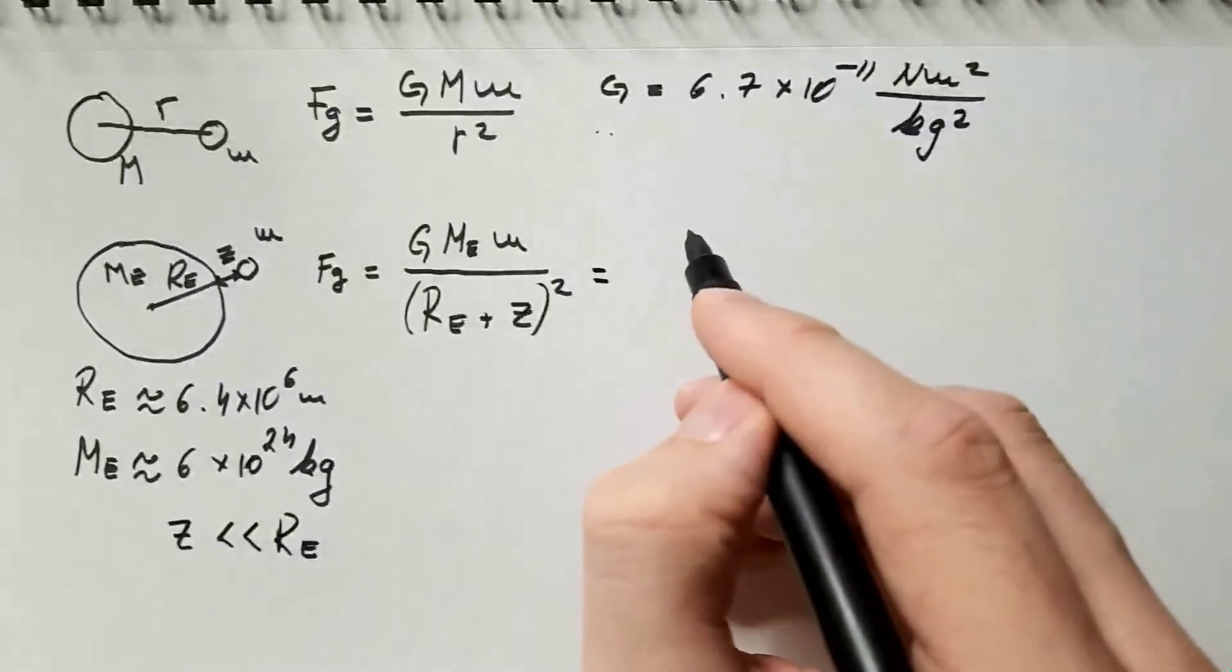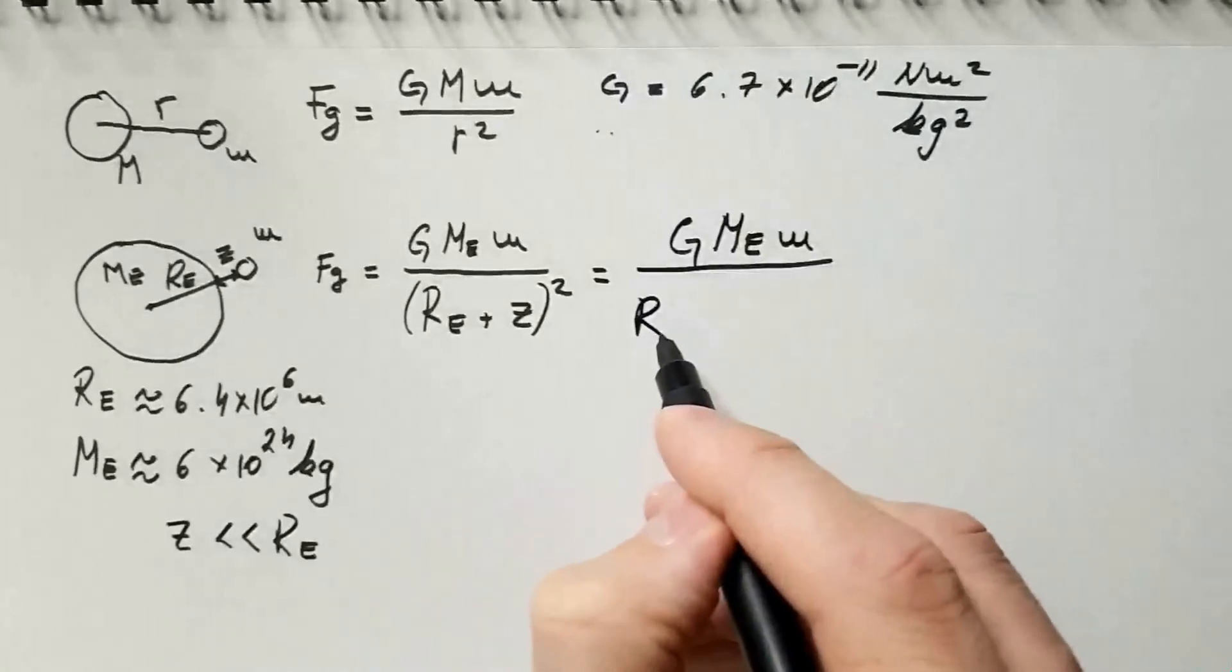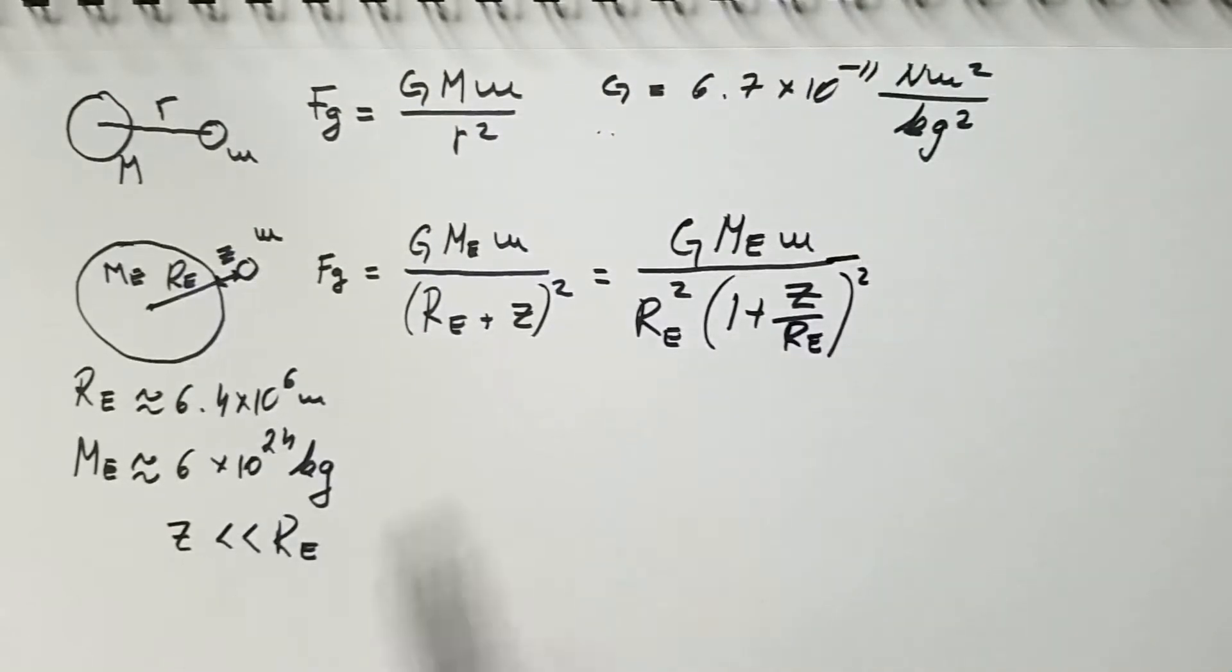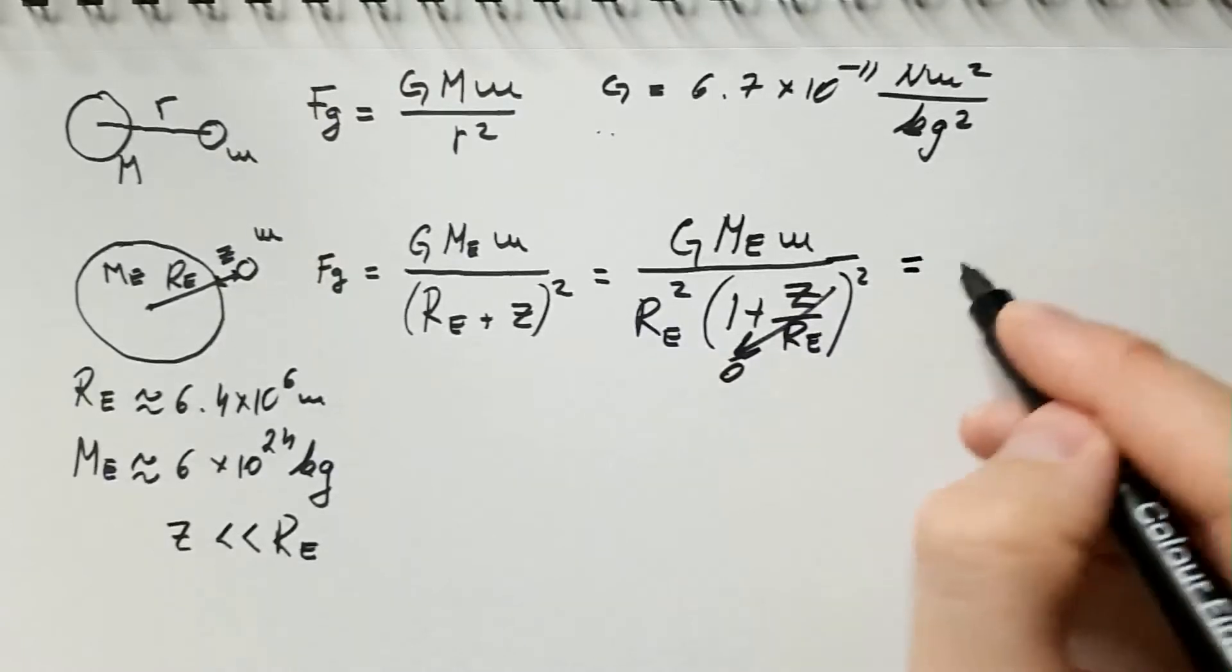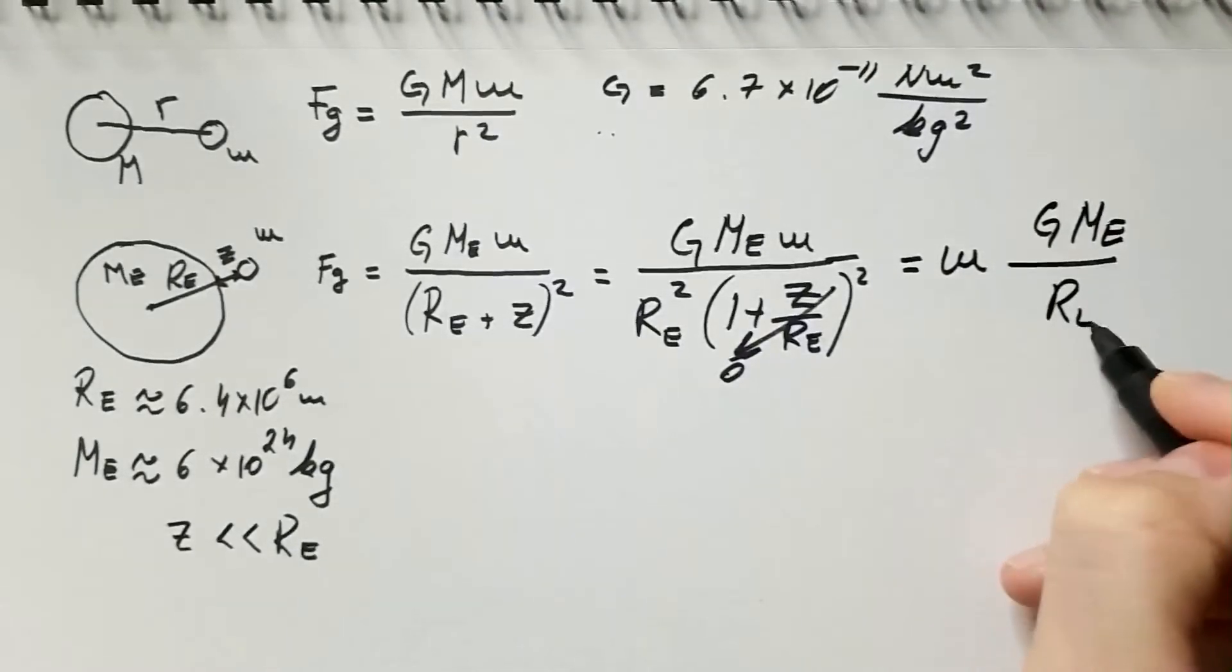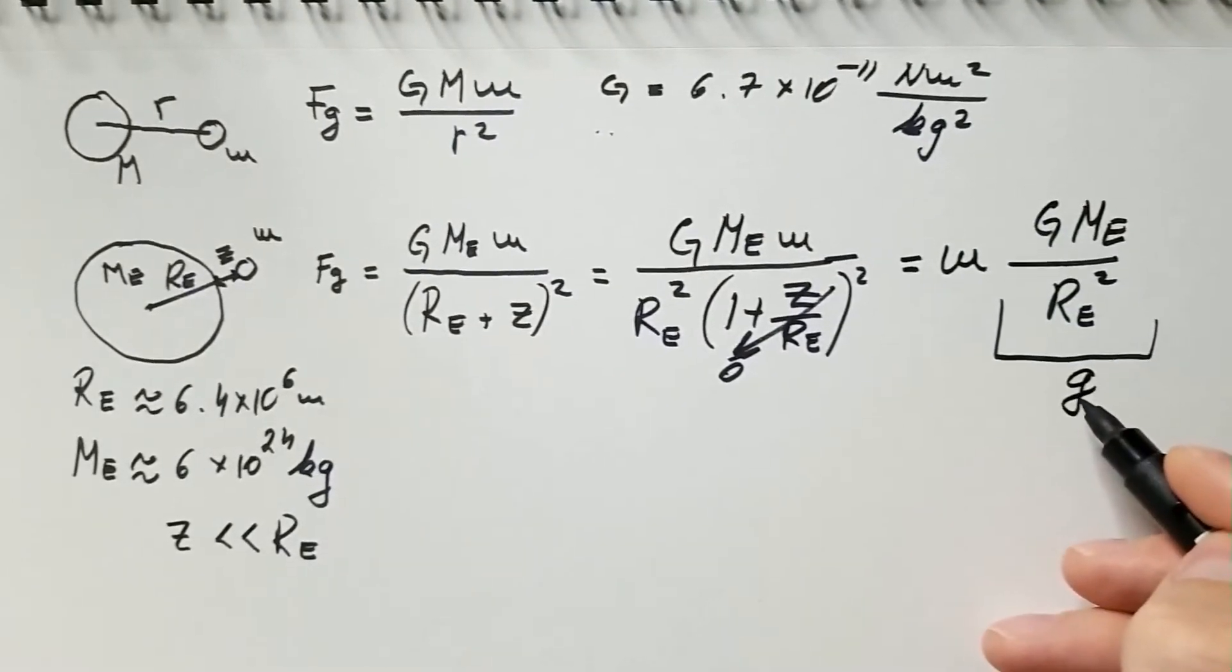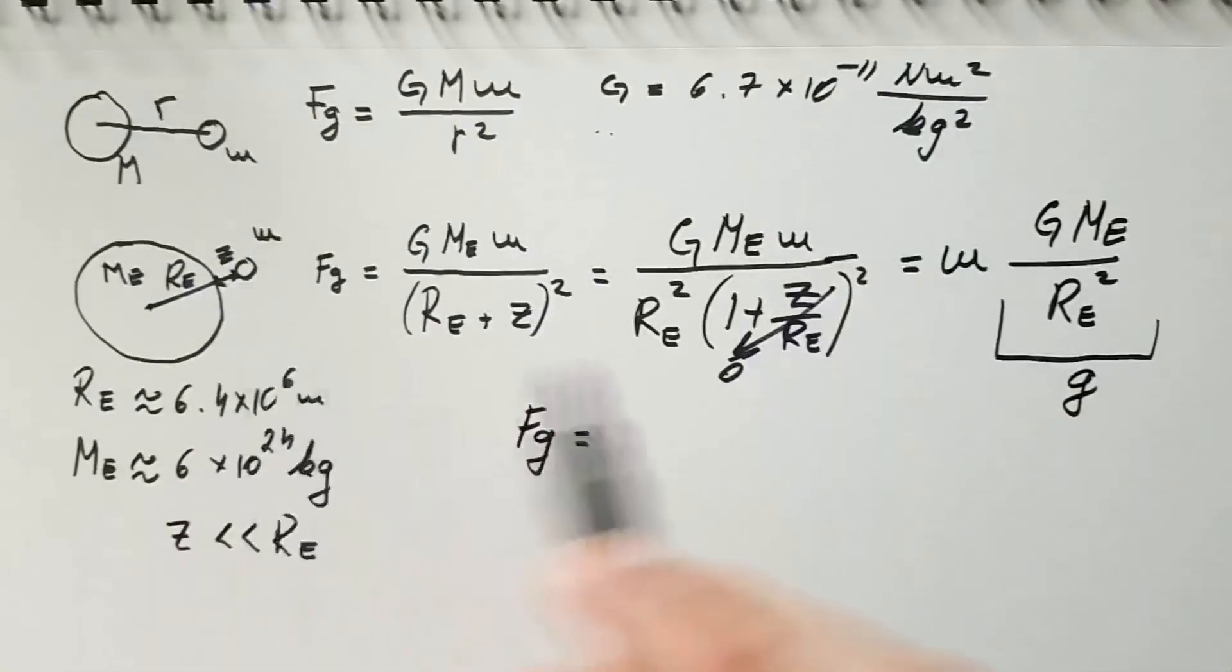Therefore, this equation can be written in the following form: G mass of Earth, mass of parcel of air, divided by, I factor out R_e squared, and I will get 1 plus z over R_e, everything squared. But because z is much smaller than R_e, then this term here is higher order and can be neglected. So, I can write this equation as m times G times mass of Earth divided by radius of Earth squared. And this constant, because notice this is constant, mass of Earth, radius of Earth, and G are all constant, we call it small g, or gravitational acceleration. So, the gravitational force that is acting on a parcel of air of mass m is simply mg.